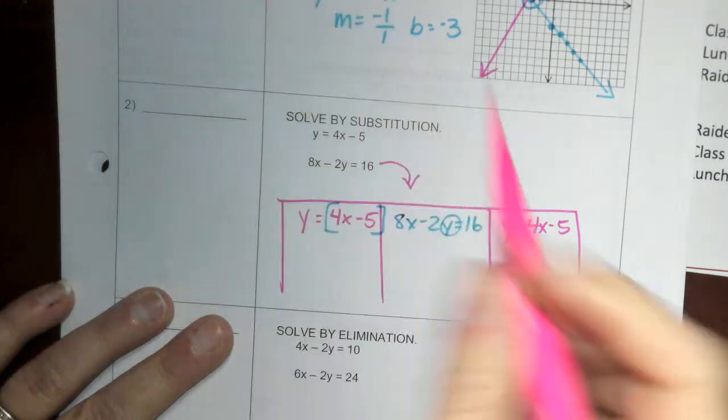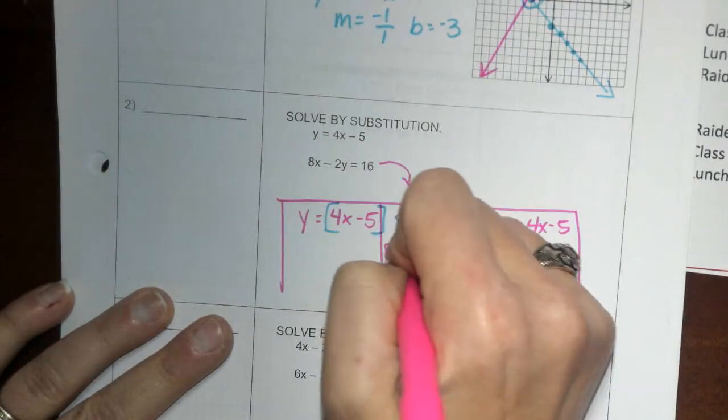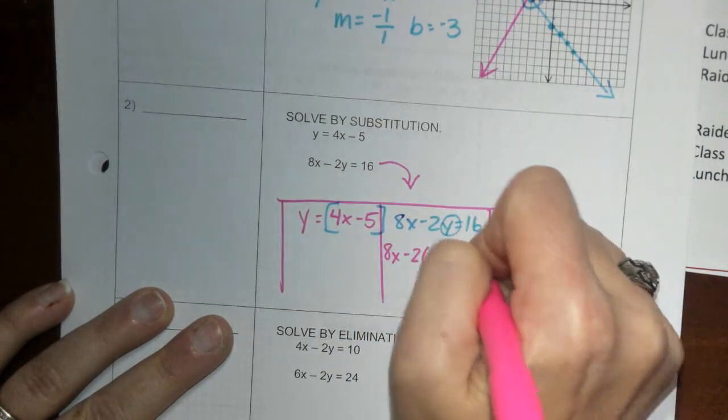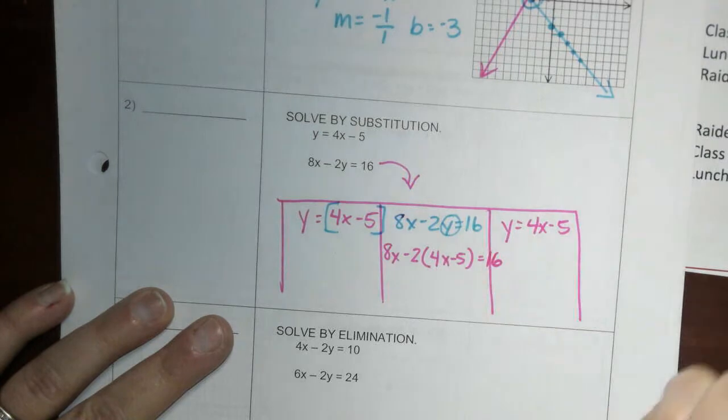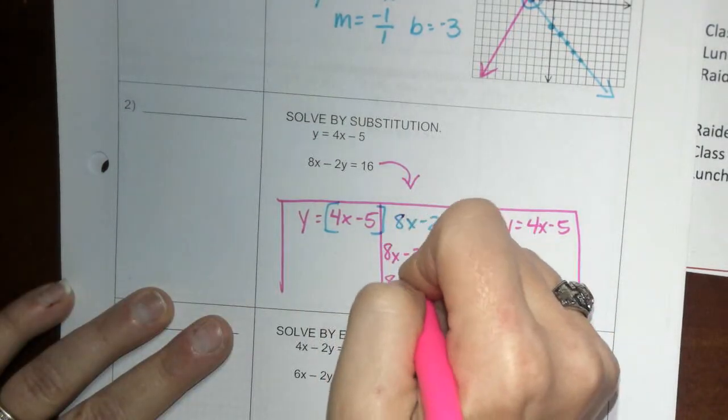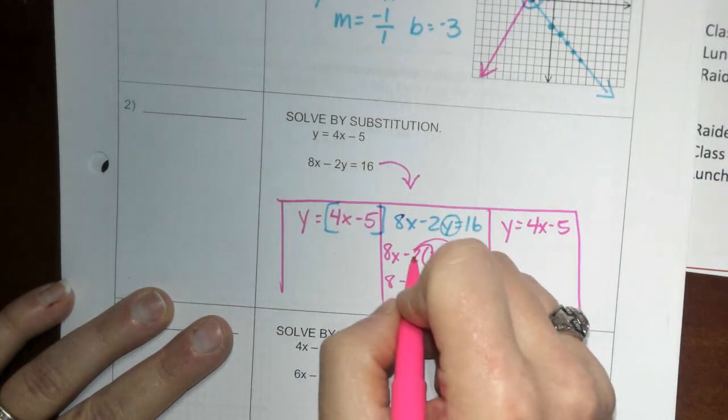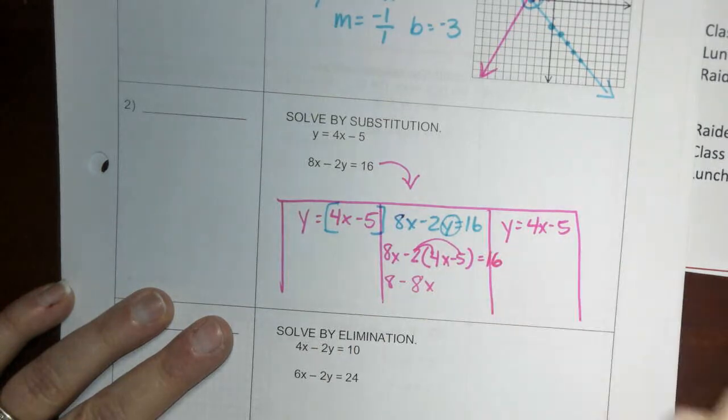I'm going to rewrite this equation: 8x minus 2 times (4x minus 5) equals 16. We have 8x, we're going to distribute this negative 2 into this right here. Minus 8x, negative 2 times 4x is negative 8x.